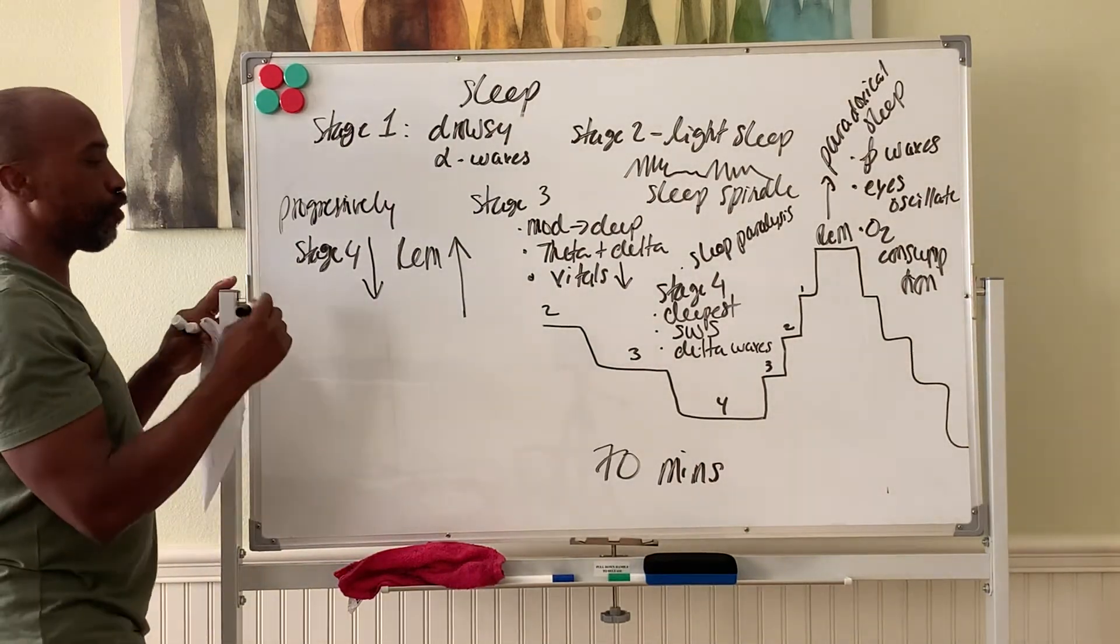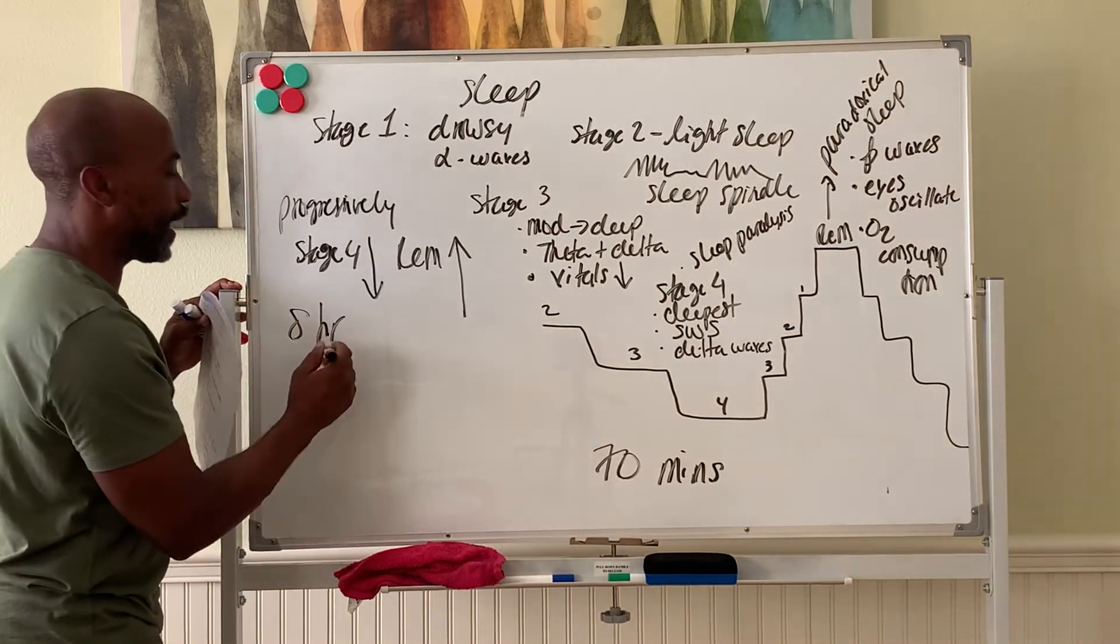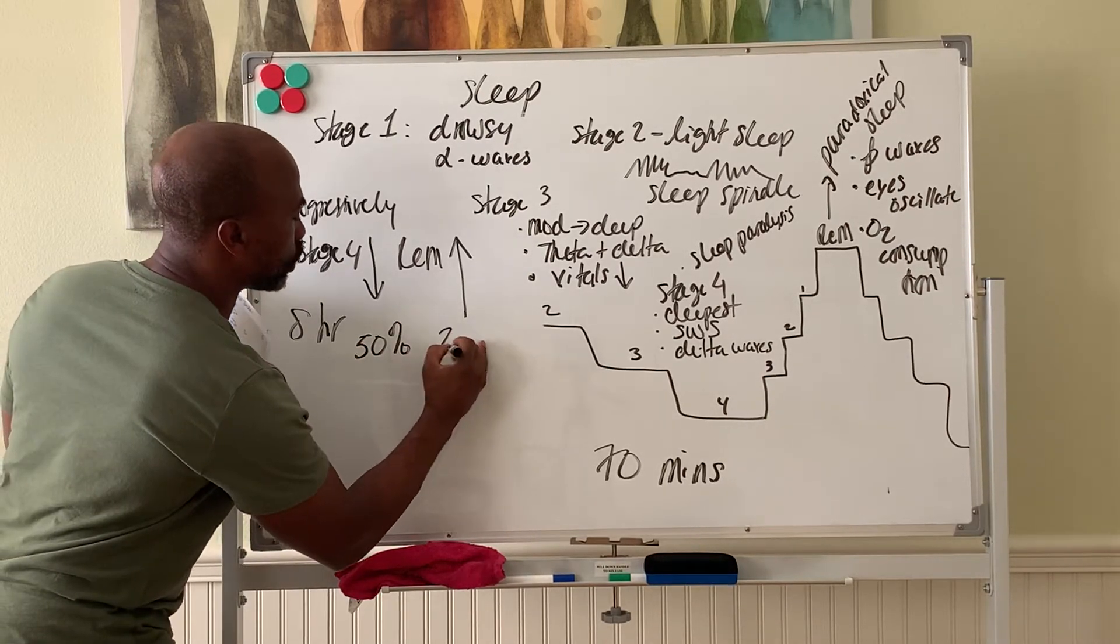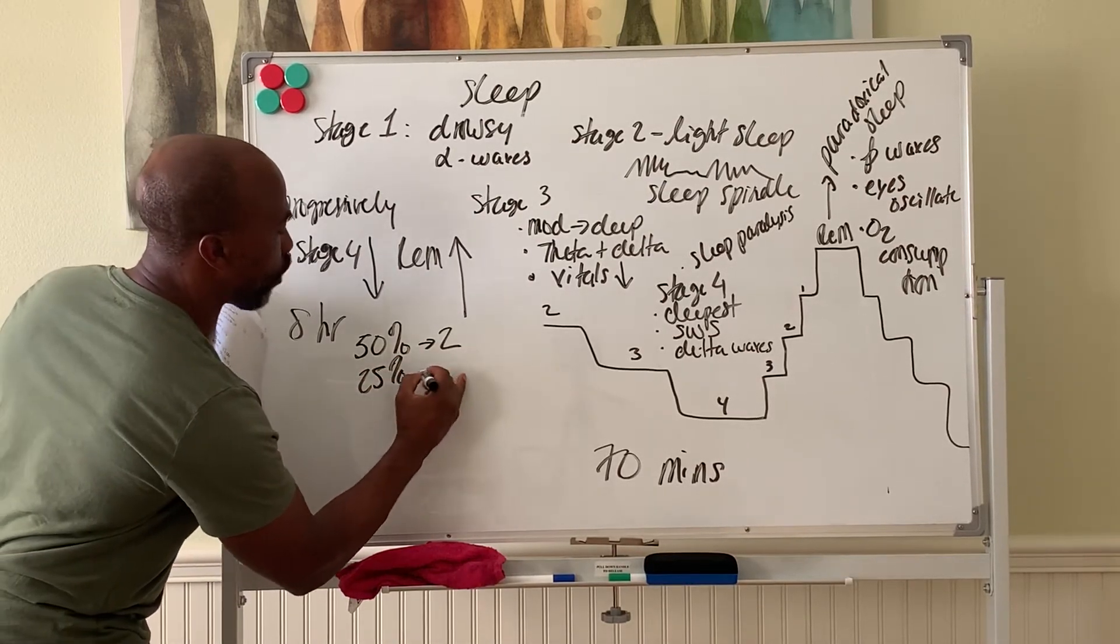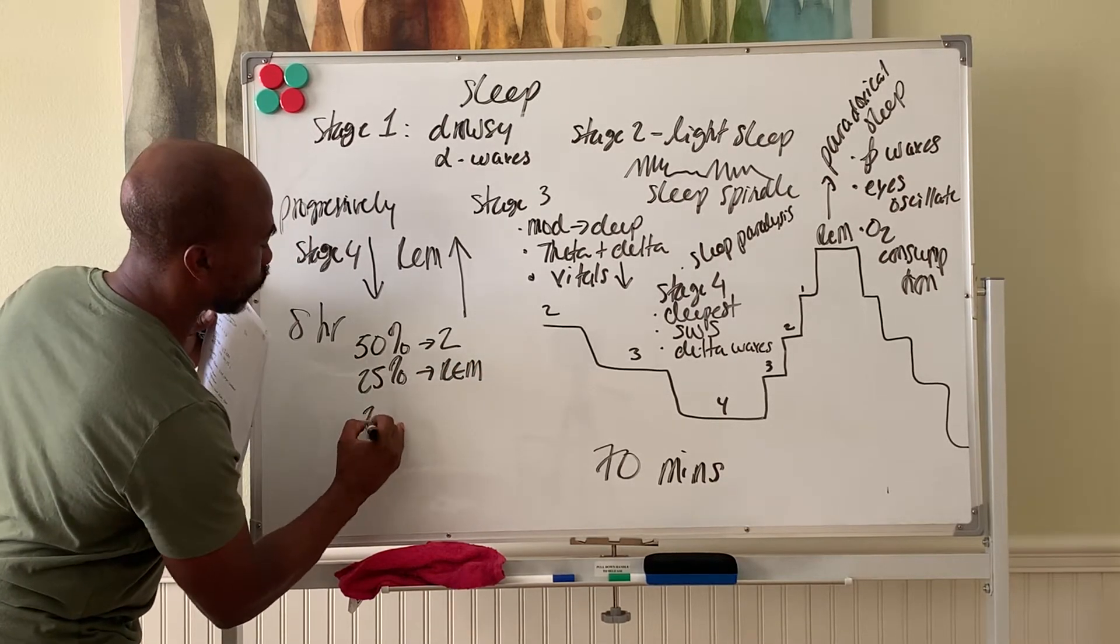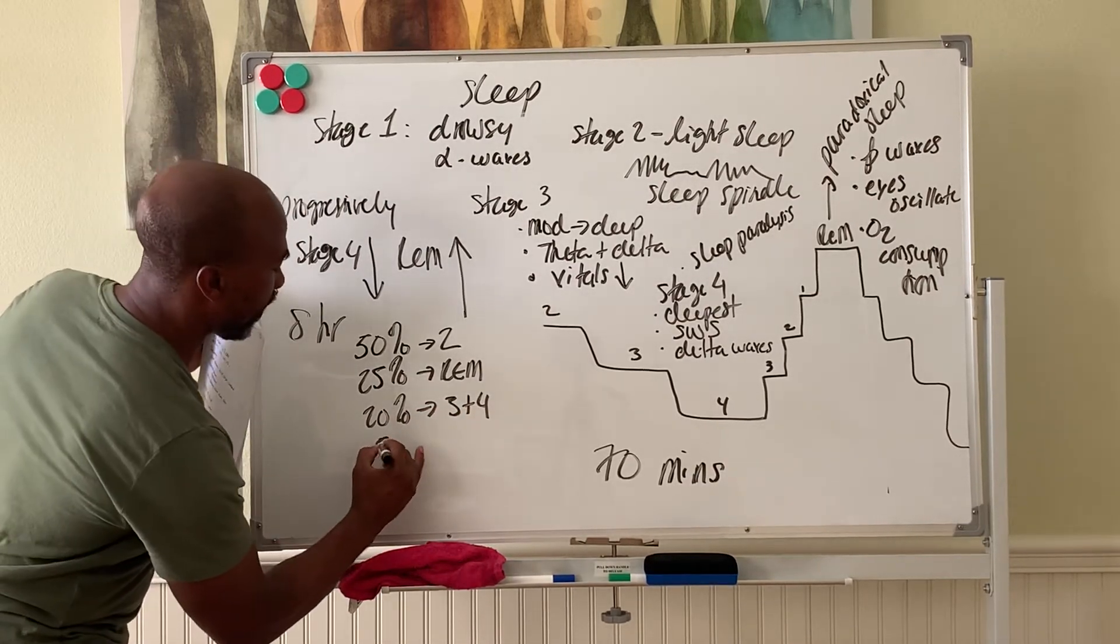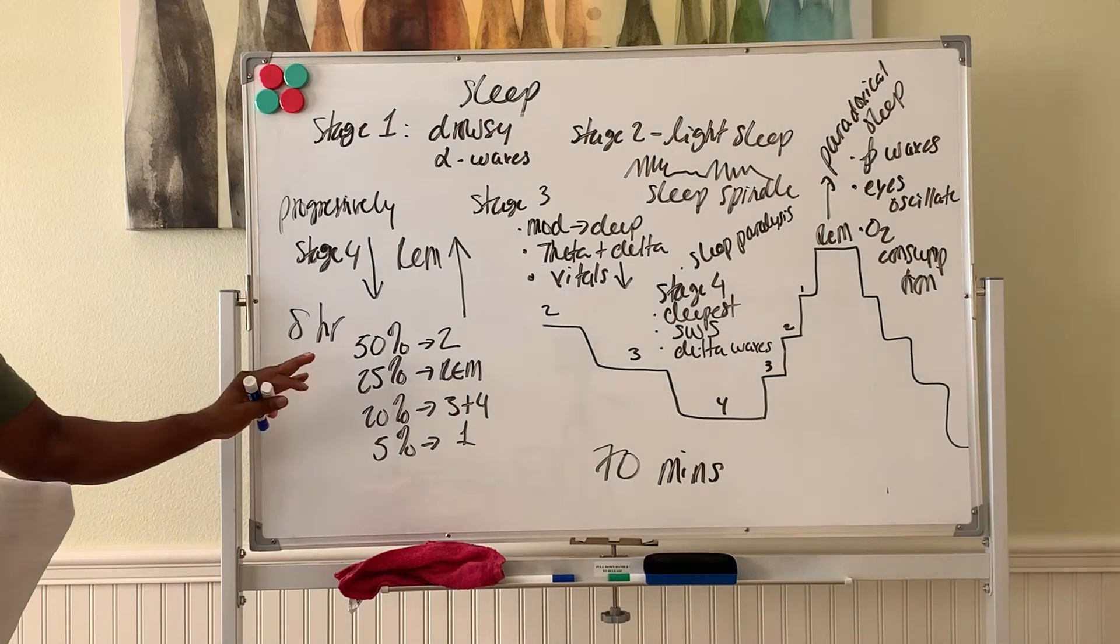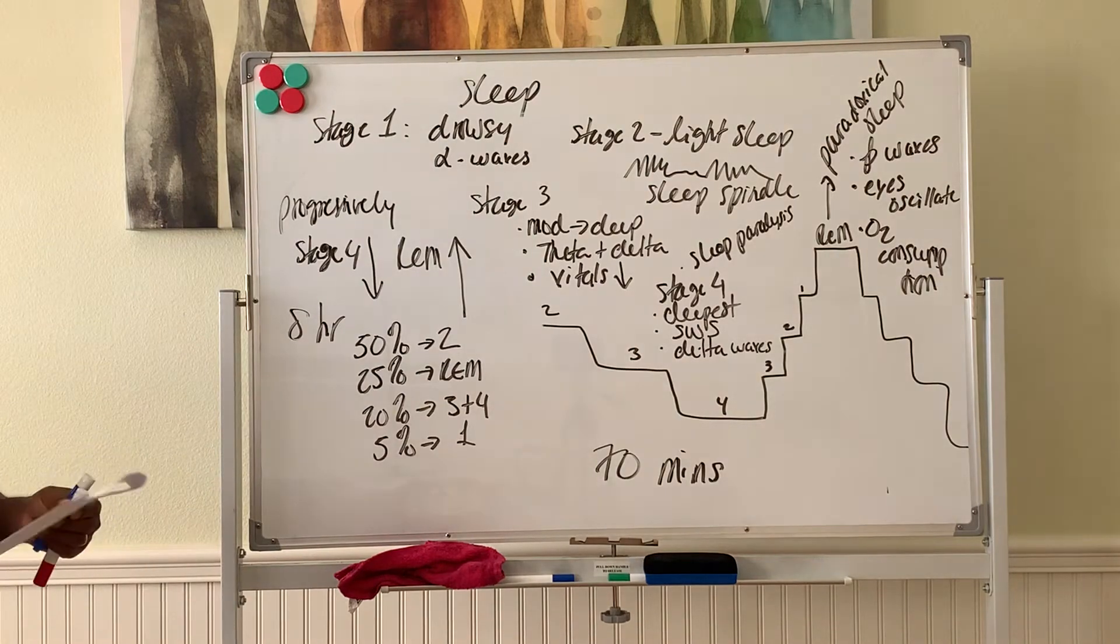On average for an eight hour sleeping period where you may cycle six times, you spend about 50% of your time in stage two. That's the longest one. Around 25% or so is in REM, around 20% is stage three and four combined, and about 5% in stage one. So that's on average how much time you spend in each sleep stage throughout a typical eight hour cycle.